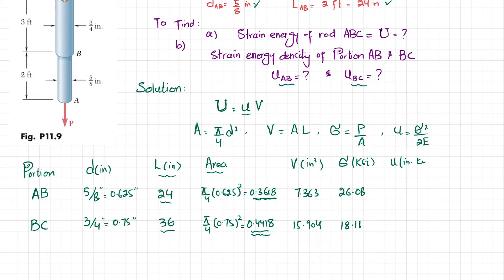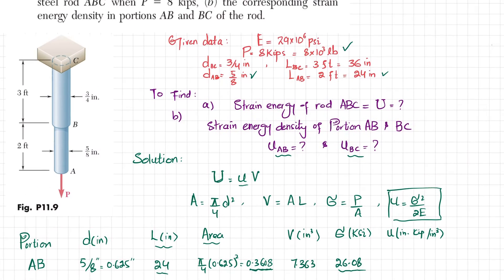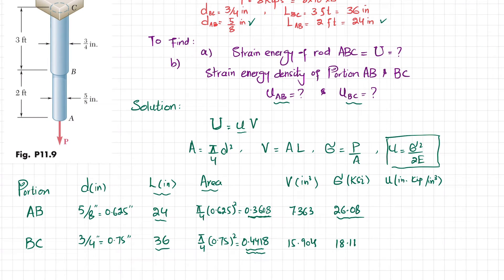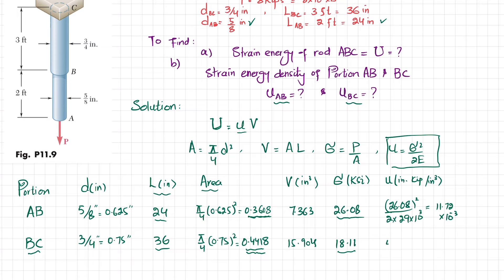Now calculating strain energy density, small u, with units of kip·inch per cubic inch. Using the formula sigma squared over 2E. For AB: 26.08 squared divided by 2 times 29 into 10 to the power 3 gives 11.72 into 10 to the power minus 3. For BC: using stress of 18.11, the strain energy density is 5.65 into 10 to the power minus 3.